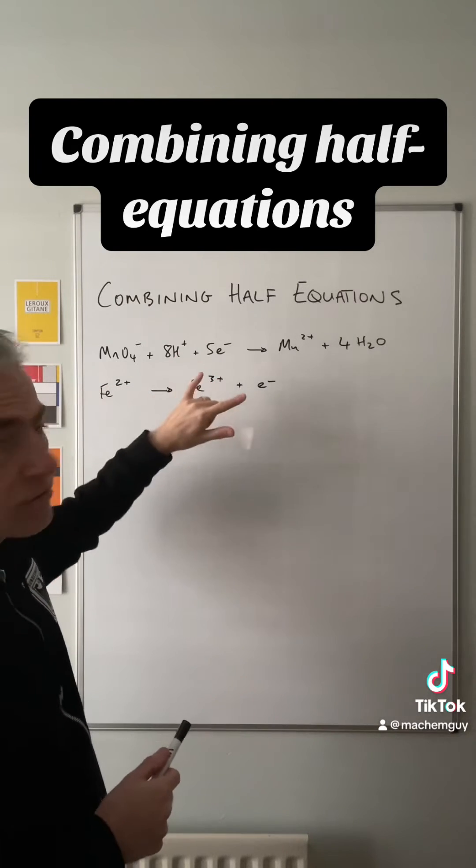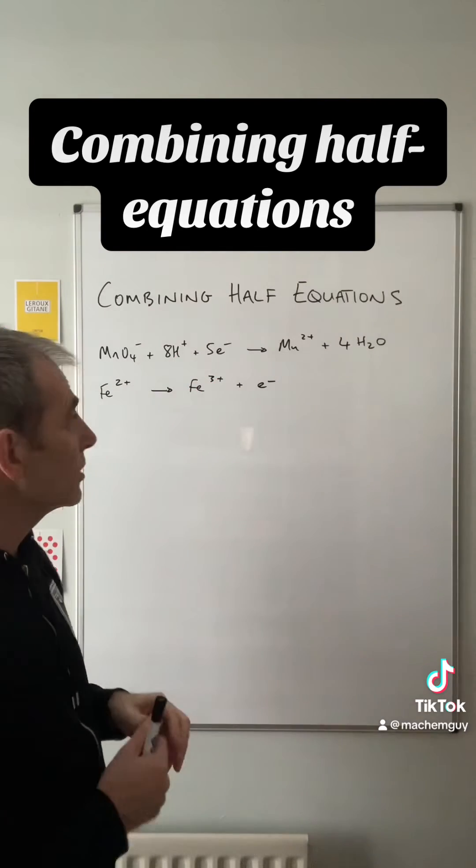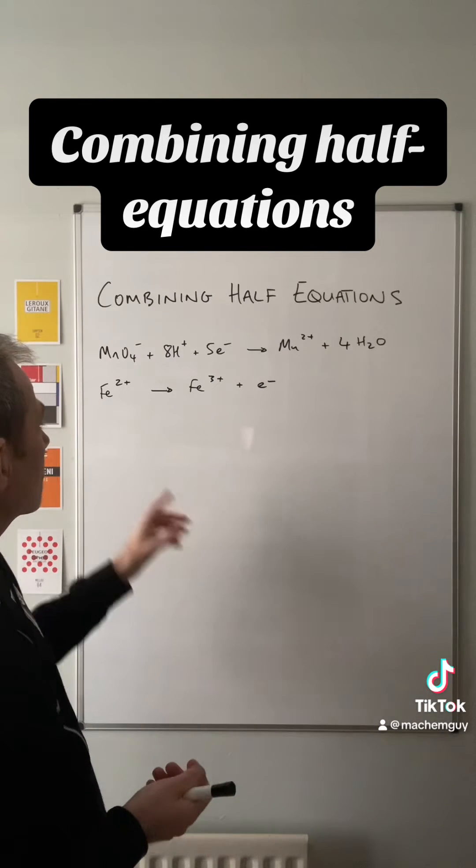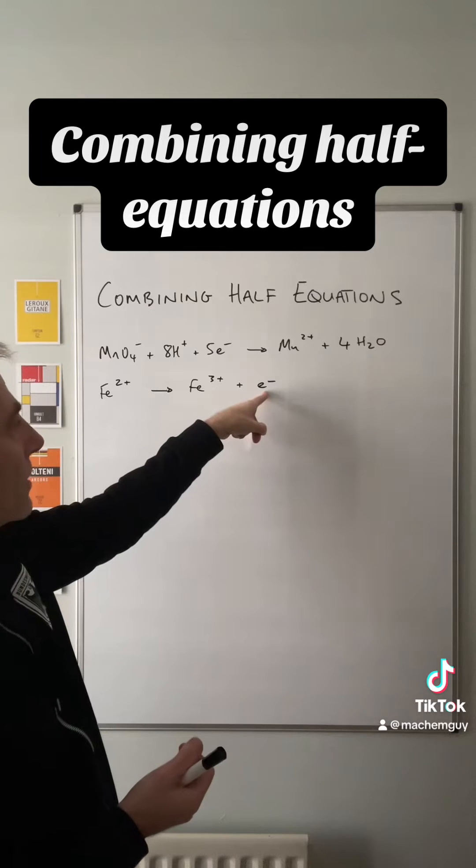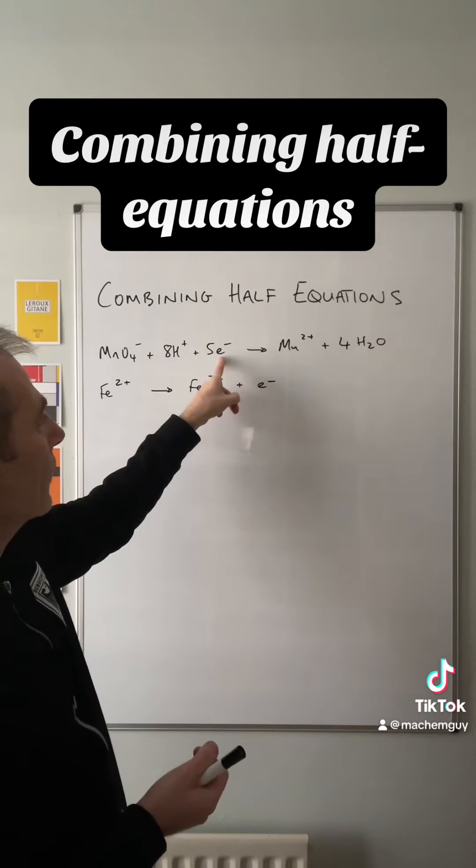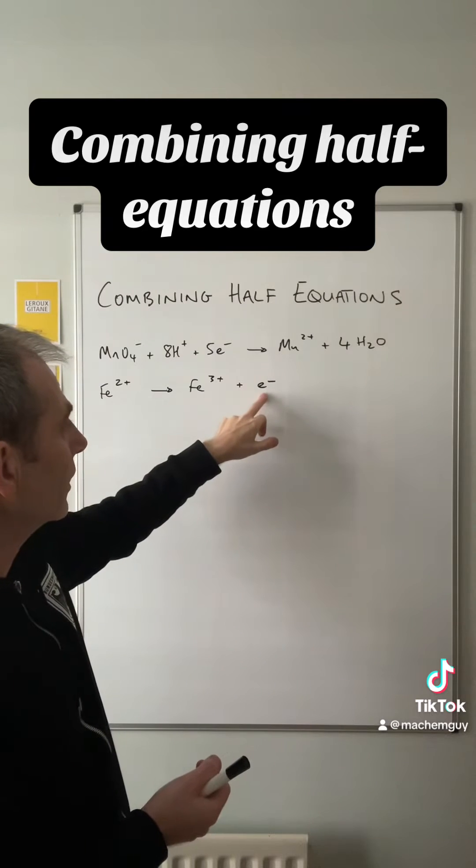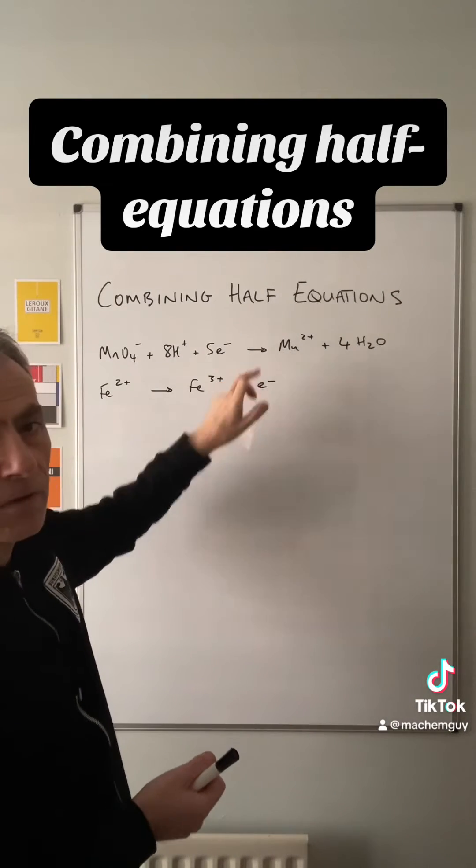But we need the electrons to disappear. So we need to multiply out so that will happen. You can see we've got only one electron involved in this one, but we've got five in this one. So all we need to do is multiply this equation by five and add it to this one here.